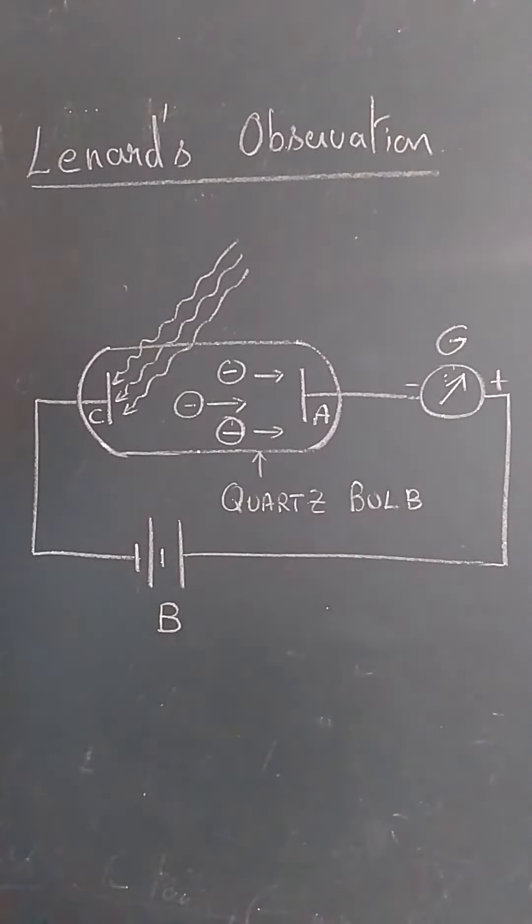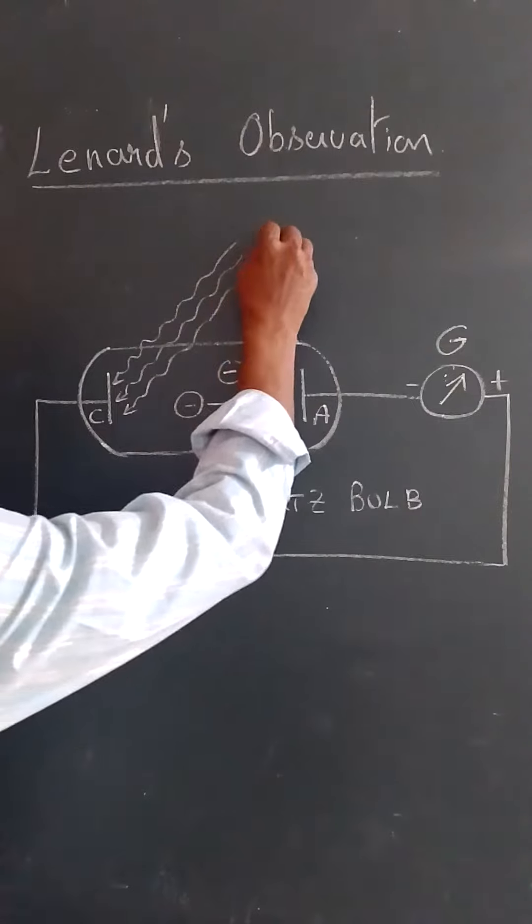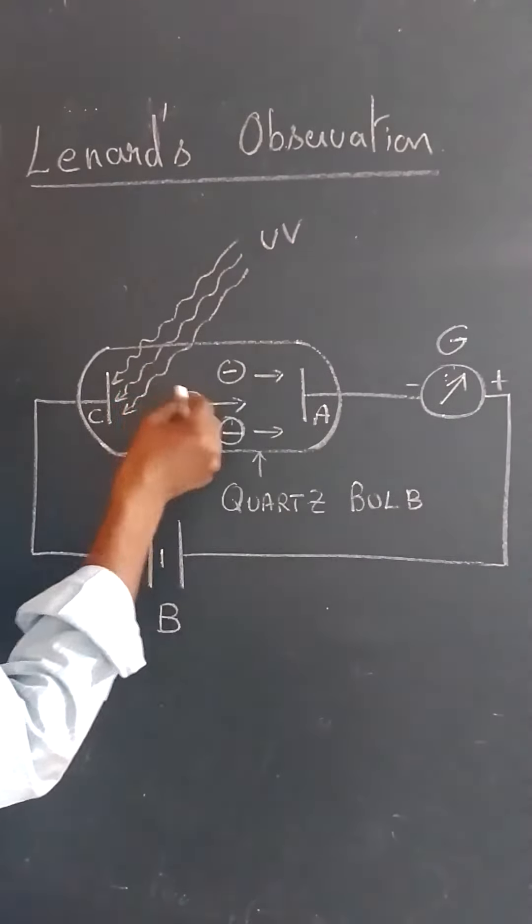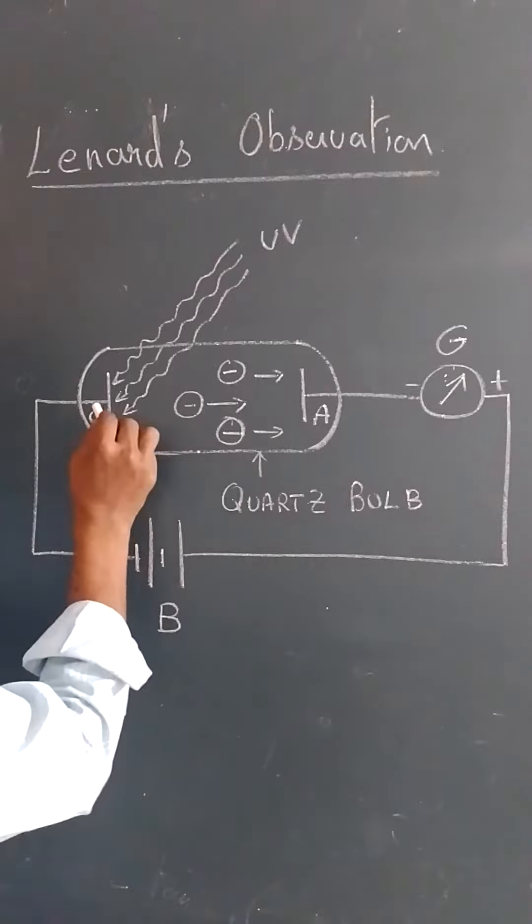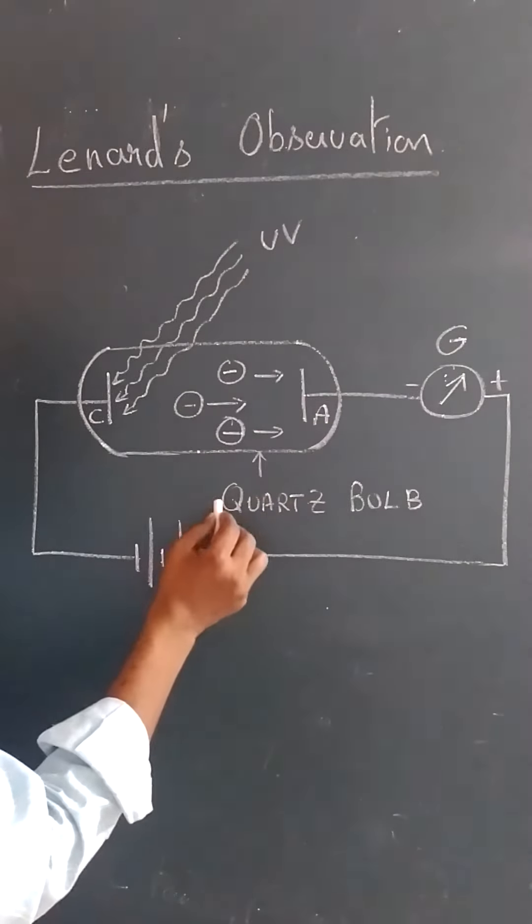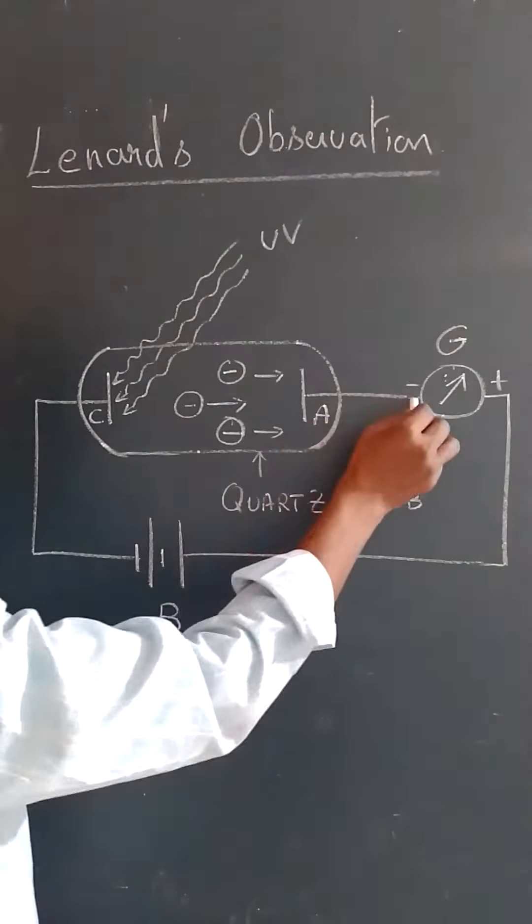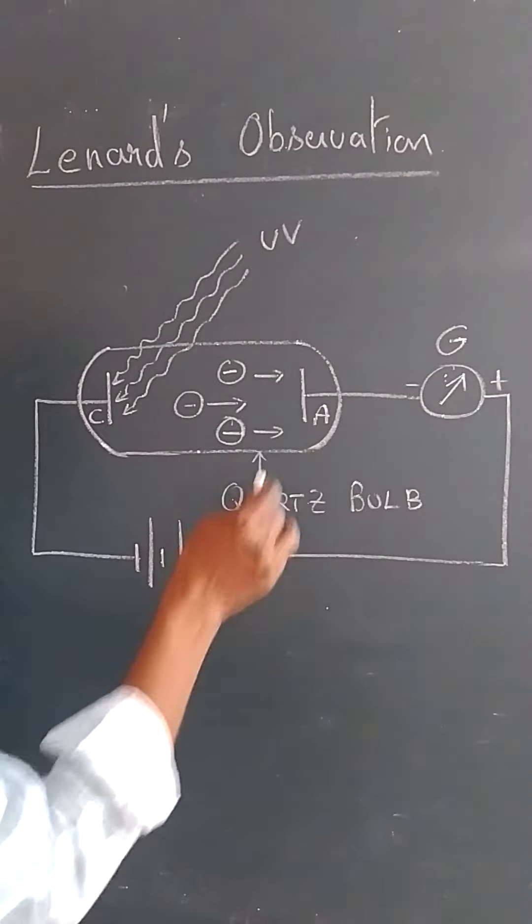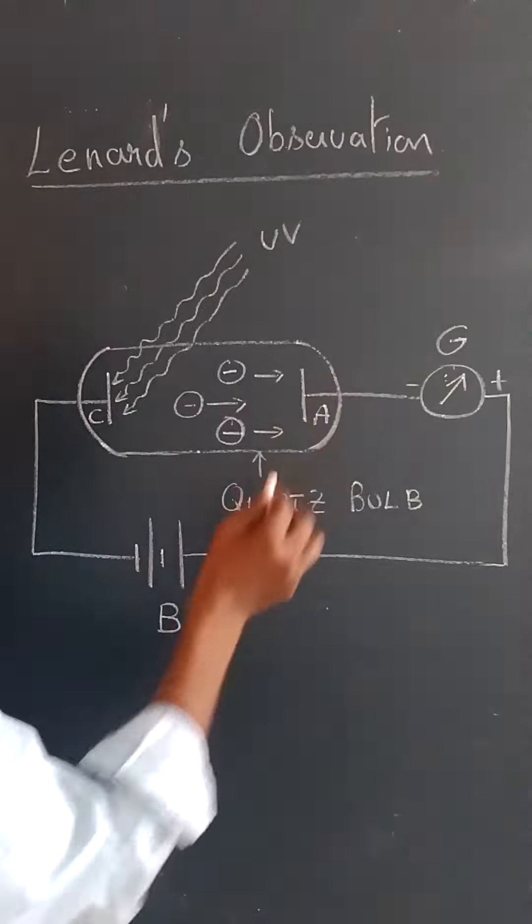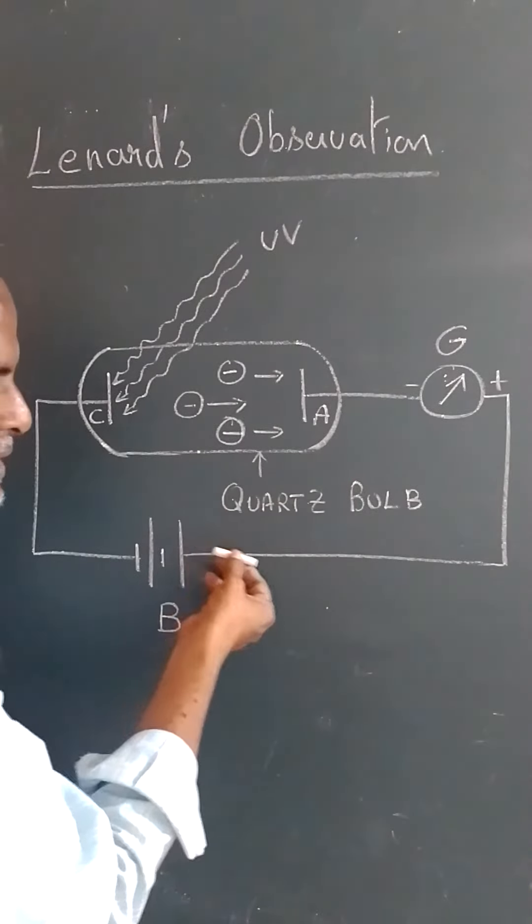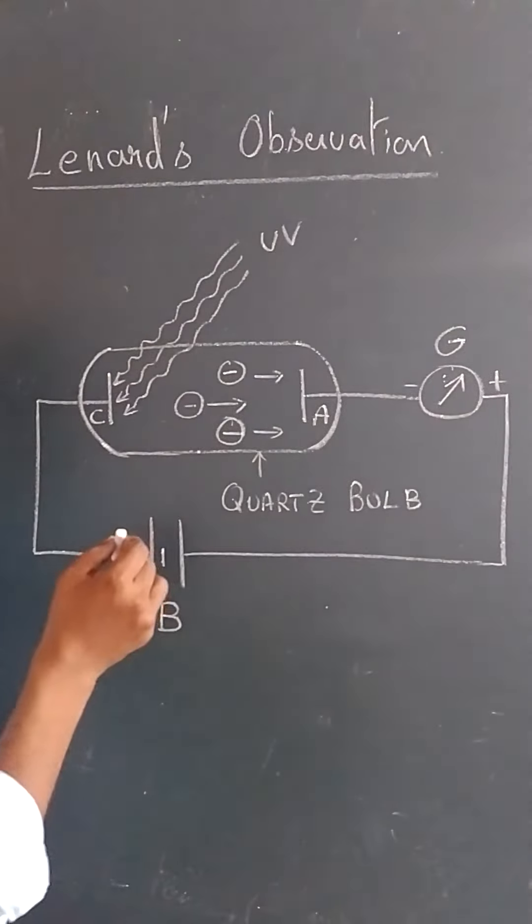What happens is when ultraviolet rays fall on the cathode, electrons are emitted and try to move towards the anode. Since the electrons are moving, there is a deflection in the galvanometer. The electrons are moving in this direction, so it is an electron flow, whereas the conventional current goes in the opposite direction.